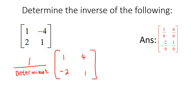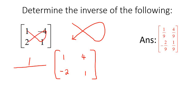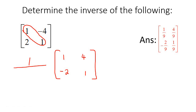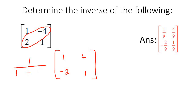Let's quickly work out the determinant. It's always going to be 1 over the determinant, then you switch them around. For the determinant, you multiply these two together — that's 1 times 1 — then you say minus, and multiply these two together, which gives negative 8. So it's 1 times 1, which is 1. A negative and a negative is positive, so that's plus 8, giving us 9.